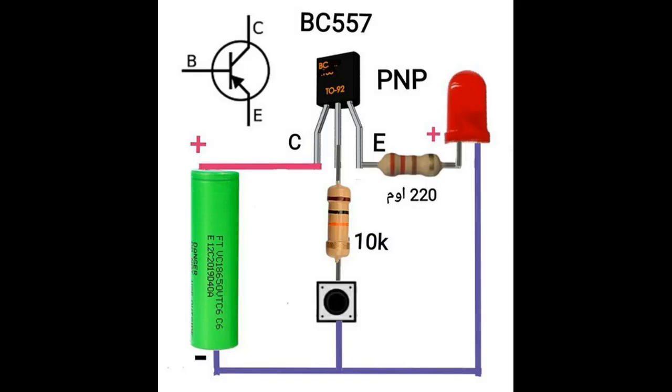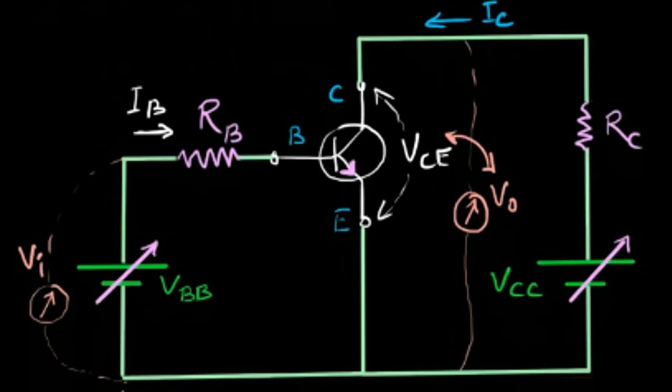If input voltage is less than 0.6 volt, then transistor will remain in off condition. And when base to emitter voltage is above 0.7 volt, then transistor will switch on.